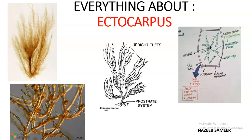Hello. Till now we have completed the discussions about the important life cycles of green algae, starting from Volvox till Spirogyra, then we have seen the only genus from yellow-green algae, that is Vaucheria. Today we are going to start with Ectocarpus. After this we will be seeing Fucus and Laminaria, with that the entire algae life cycles will be coming to an end. Ectocarpus is a macroscopic — which we can see with our naked eye — and marine algae.